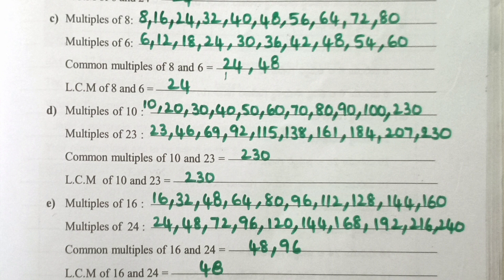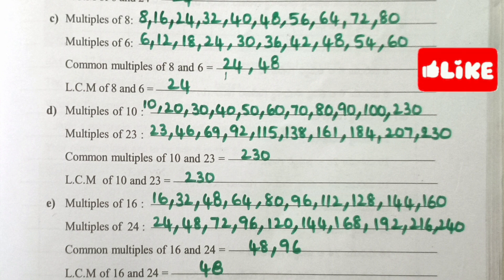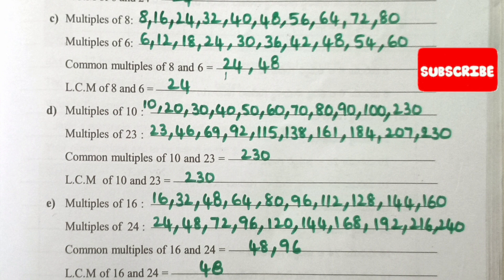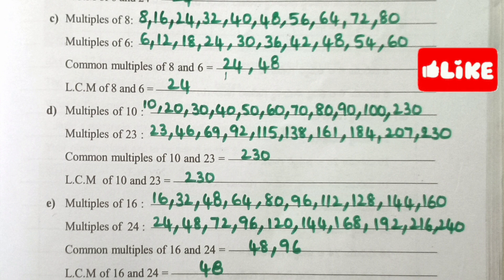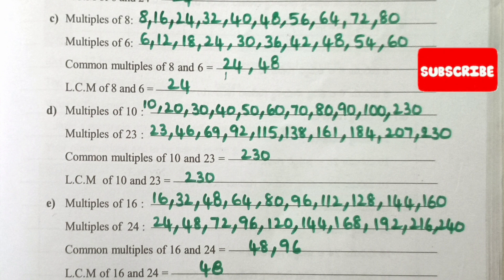LCM of 10 and 23 is 230. Multiples of 16: 16, 32, 48, 64, 80, 96, 112, 128, 144, 160. Multiples of 24: 24, 48, 72, 96, 120, 144, 168, 192, 216, 240. Common multiples of 16 and 24 are 48 and 96. LCM of 16 and 24 is 48.